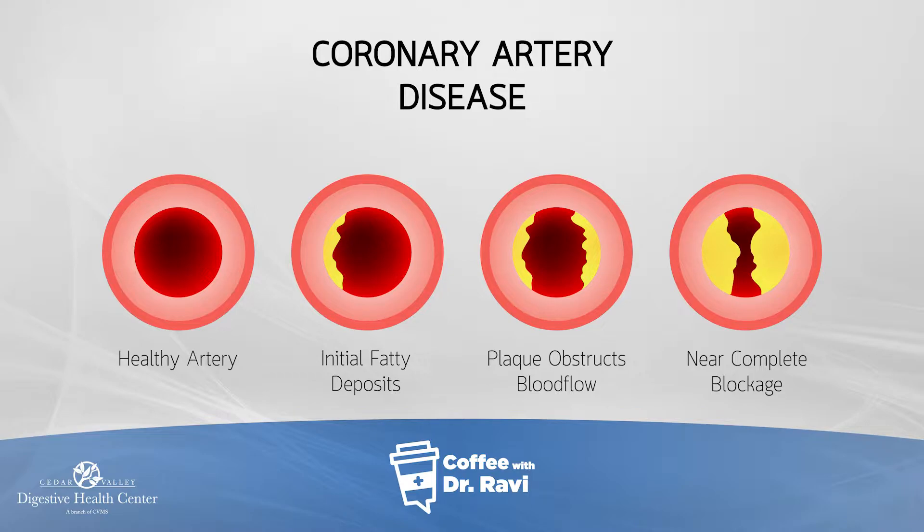The first step in formation of heart disease is what's called a fatty streak. Many of us as we age start having this fatty streak, and that does not necessarily mean we are having narrowing of blood vessels, because it can be somewhat of a normal process that happens with aging.